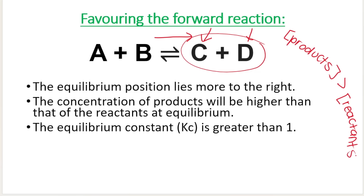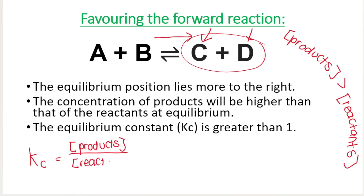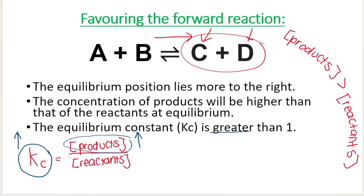The concentration of products will be higher than the concentration of reactants at equilibrium. In a later video in this playlist, we look at the equilibrium constant, the Kc value, which can be calculated by looking at the concentration of products divided by the concentration of reactants. If we have more products than reactants and the concentration of products is higher — think about a fraction: if I make the top of the fraction bigger, Kc will be bigger. So if the equilibrium constant is greater than one, then we know the forward reaction was favored.